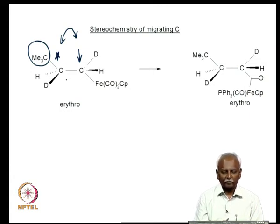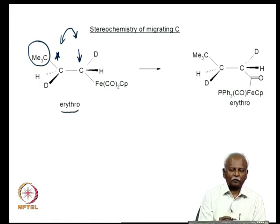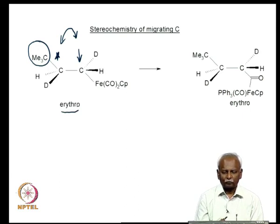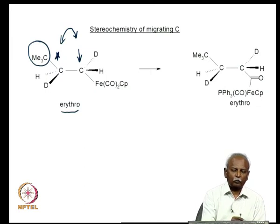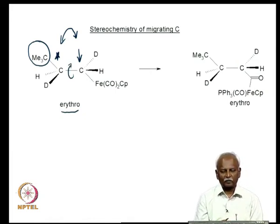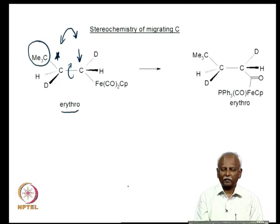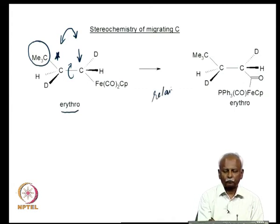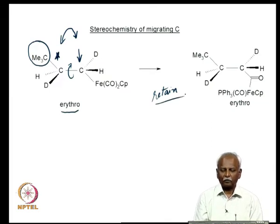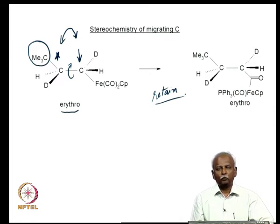If you rotate around this carbon-carbon bond, you can see that the two hydrogens are on the same side — so this is the erythro compound. After migration, you can see that the chirality was still retained and the two hydrogens are still on the same side with respect to each other. He started with the erythro compound and ended with the erythro compound, showing that the stereochemistry of the migrating carbon is retained after migration. This seems to indicate that the migrating group is actually migrating like an anionic group, which would have a lesser propensity to undergo inversion.